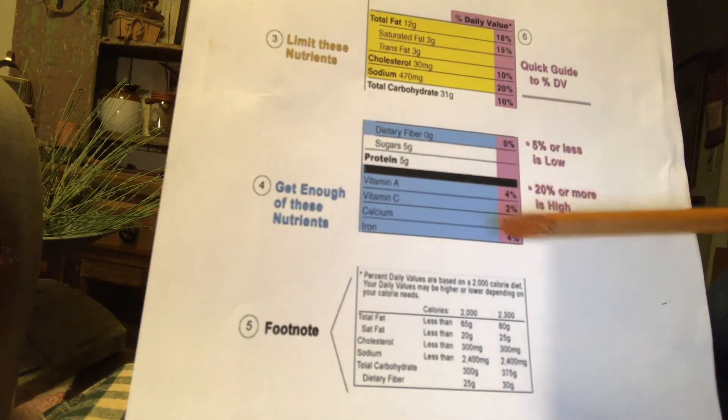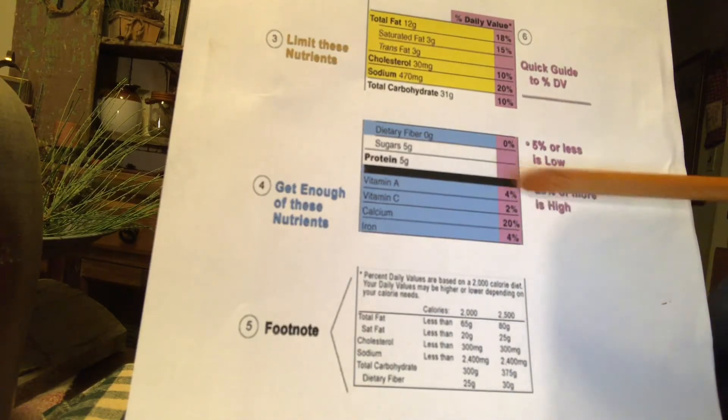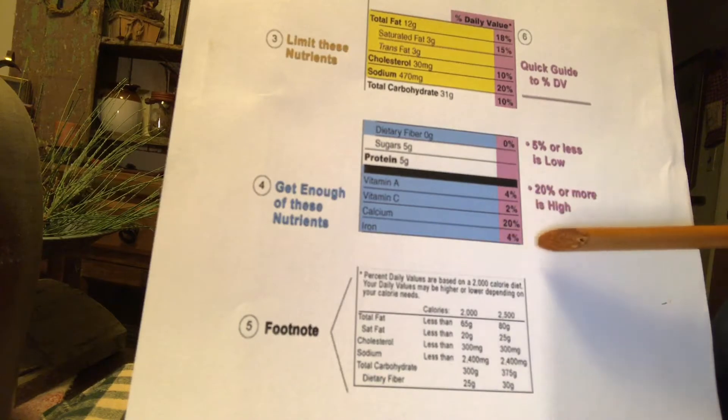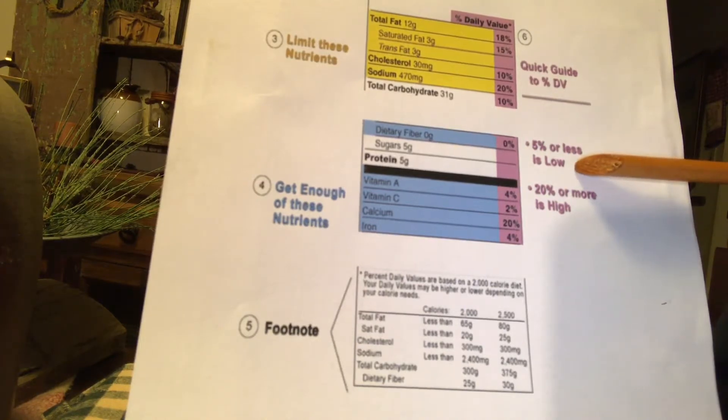Now, the good guys, you can see here, vitamin A is 4%. Vitamin C is 2%. Iron is 4%. Now, that's one serving. That, if you use this guideline of 5% or less, is considered a low item. These are low amounts.